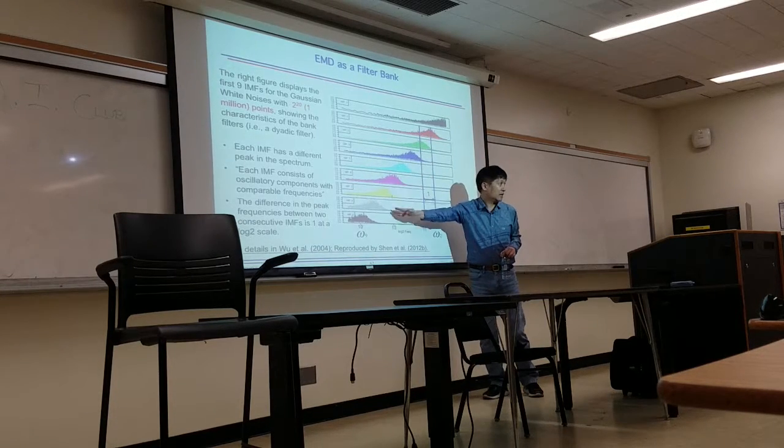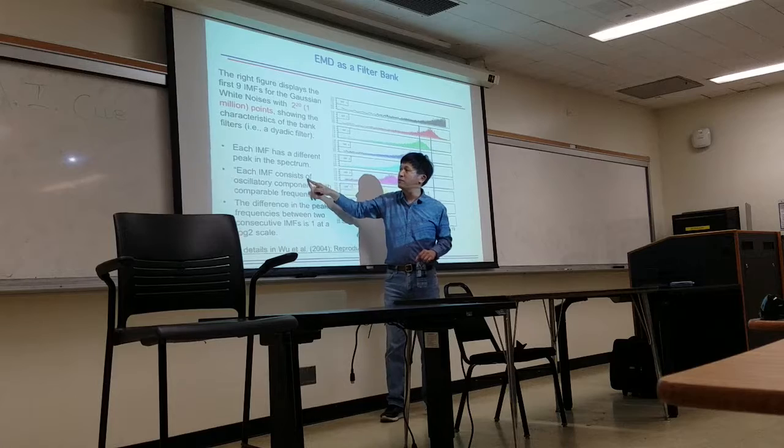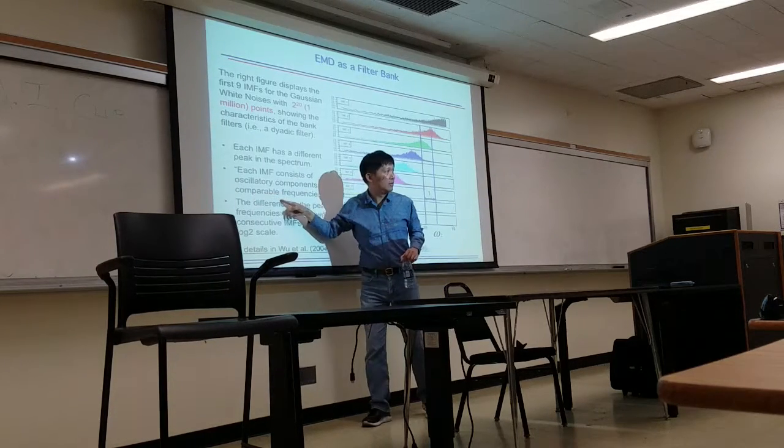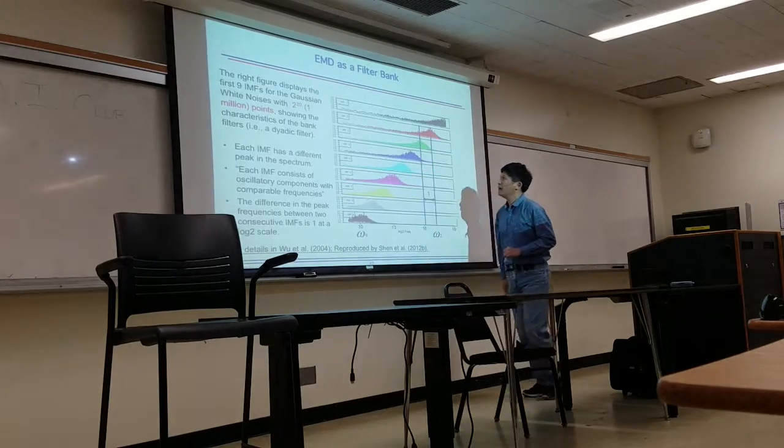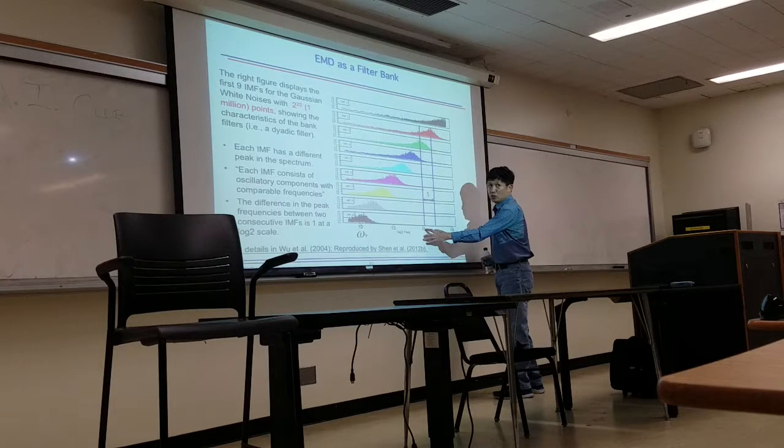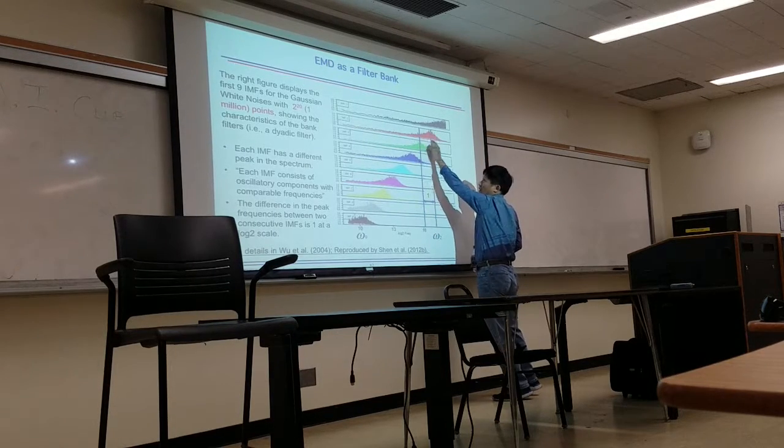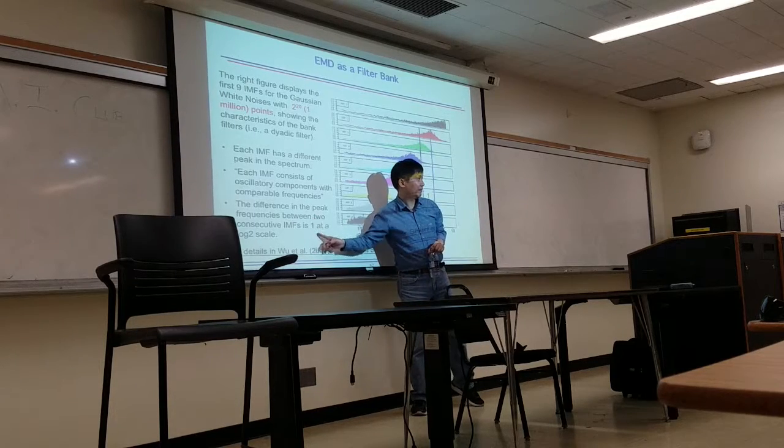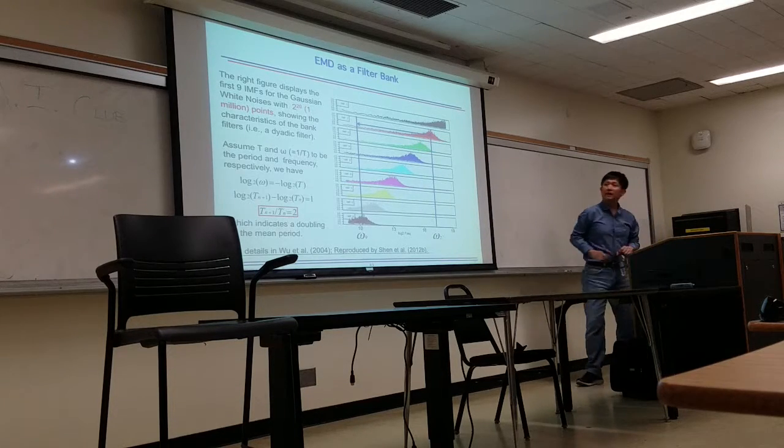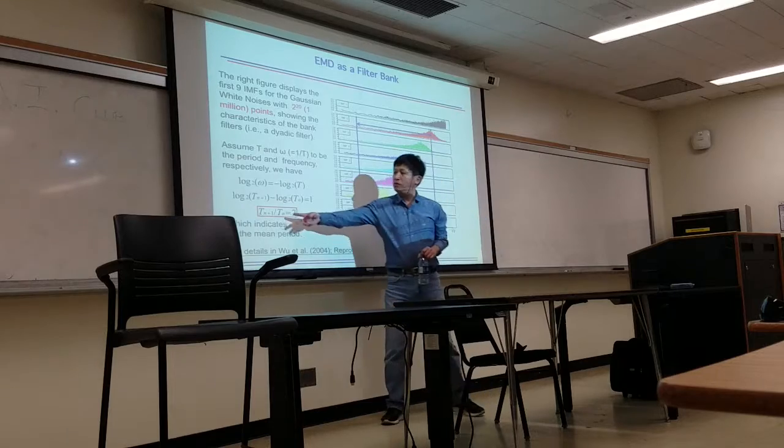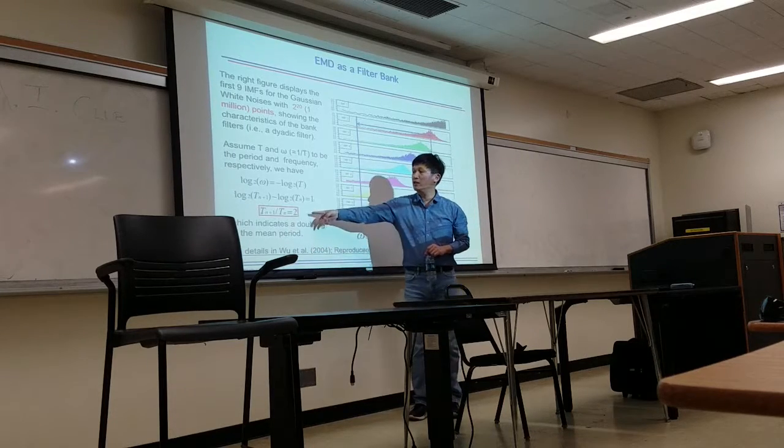So that's why we need it. And different IMF have a different peak. So therefore, that gives us this kind of conclusion. Each IMF consists of oscillatory component with comparable frequency. Because that is not a single peak, right? So it's comparable frequency. And more important, you can check two consecutive IMF, the peak, the difference in the peak of these two is always one. And remember, this is a log-scale. So what does that mean? It means the ratios of two periods between two consecutive IMF is always two.